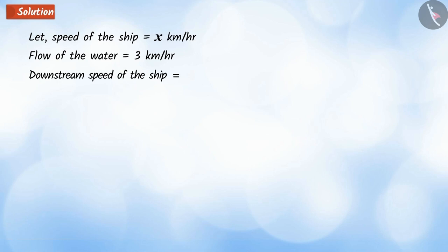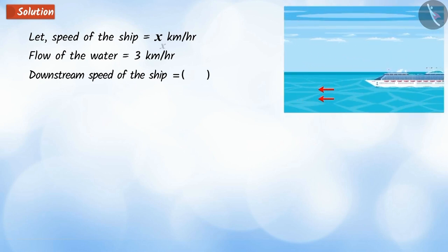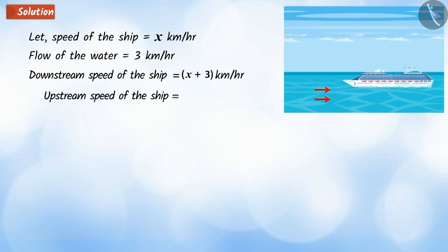The speed of the ship favorable to the stream is equal to x plus 3 km per hour and the speed of the ship unfavorable to the stream is equal to x minus 3 km per hour.